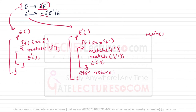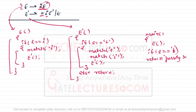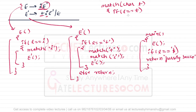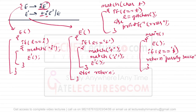We call these two functions from the main function. Since E is the start symbol, we call e from main. If the lookahead symbol equals dollar, we declare successful parsing. The match function looks like this: if the lookahead symbol equals t, then lookahead gets the next character via getchar; otherwise we print an error.